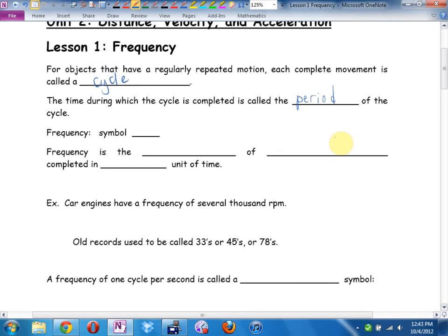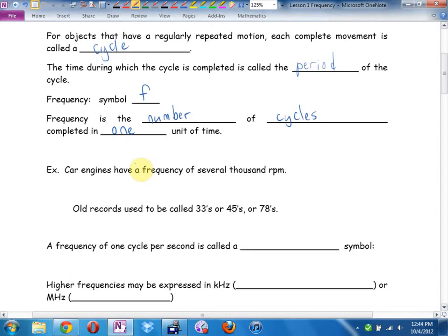There's also something called frequency. The symbol for frequency is a lowercase f. Frequency is the number of cycles completed in one unit of time. As an example, car engines have a frequency of several thousand RPM. What does RPM stand for? Revolutions per minute.